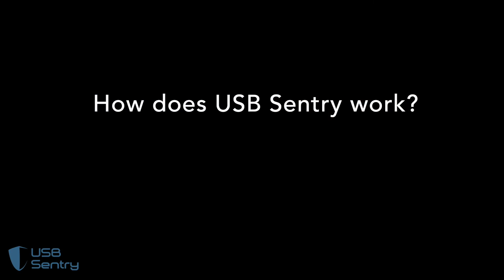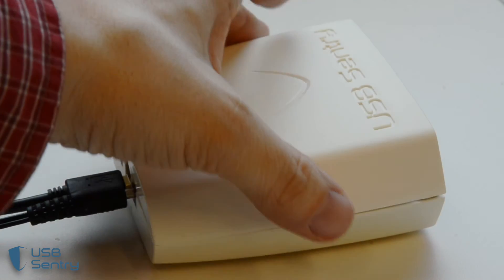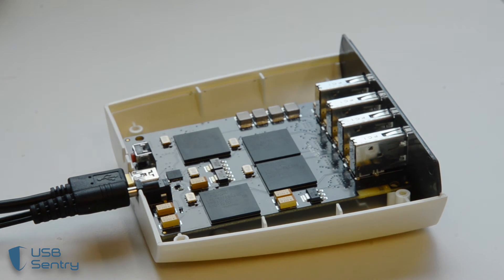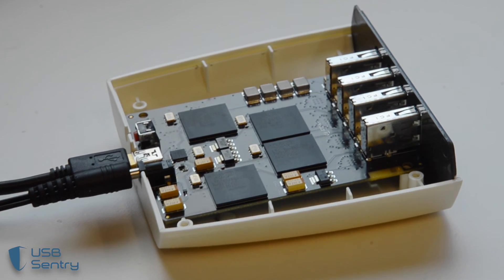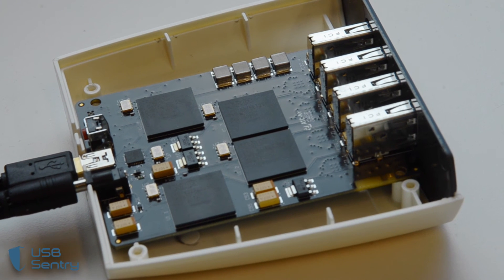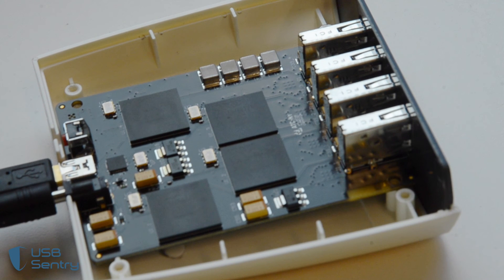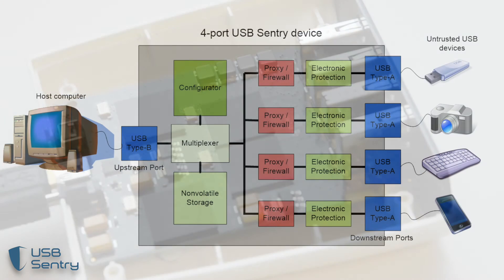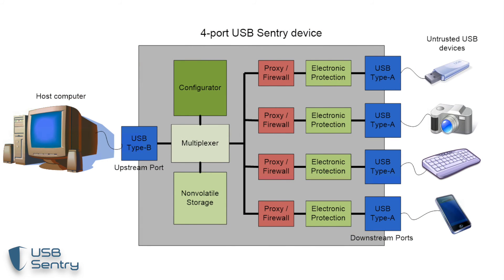How does USB Sentry work? Each port of the USB Sentry is guarded by our protection unit, which is a microcontroller loaded with custom security software. Like a network firewall or a transparent proxy, this microcontroller is a logical barrier between the upstream host computer and the downstream USB device. Every USB packet between the host and the device has to pass through the protection unit. In normal operation, the protection unit passes all USB packets from one side to the other transparently, as if it weren't there. But it inspects every packet, and if it sees a packet that violates the USB protocol or engages in any behavior that's been identified as dangerous, it blocks the packet and immediately cuts off the device, protecting the host computer.